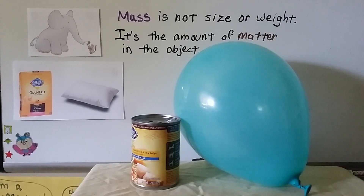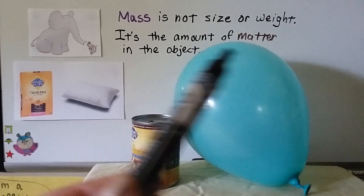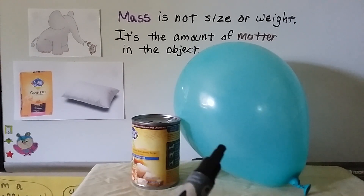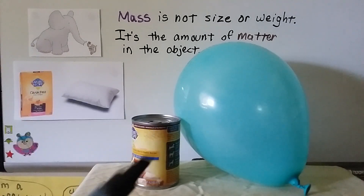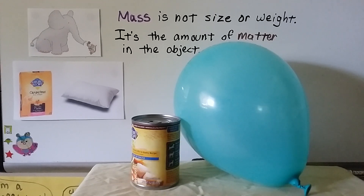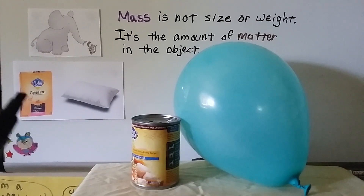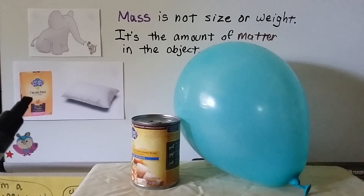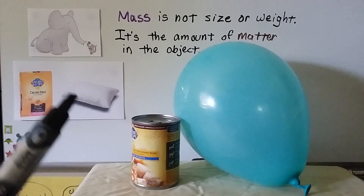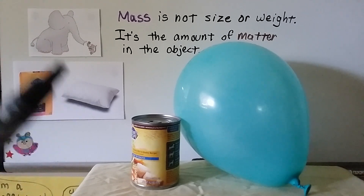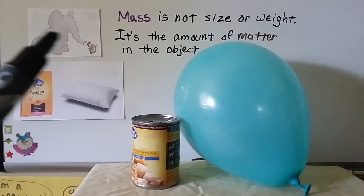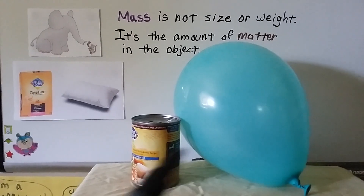So mass is not size or weight. A balloon looks pretty big, and a can of dog food is much smaller, but the can of dog food has more mass than the balloon because the balloon is filled with air. It's the amount of matter in the object. Here we have a big bag of dry dog food and a bed pillow about the same size — the bag has more mass because it's filled with dog food, while the pillow, if we squish it, we can squeeze out all the air. Sometimes something with more mass will be larger, like an elephant versus a mouse, but sometimes it won't. Mass is not size or weight — it's the amount of matter in the object.